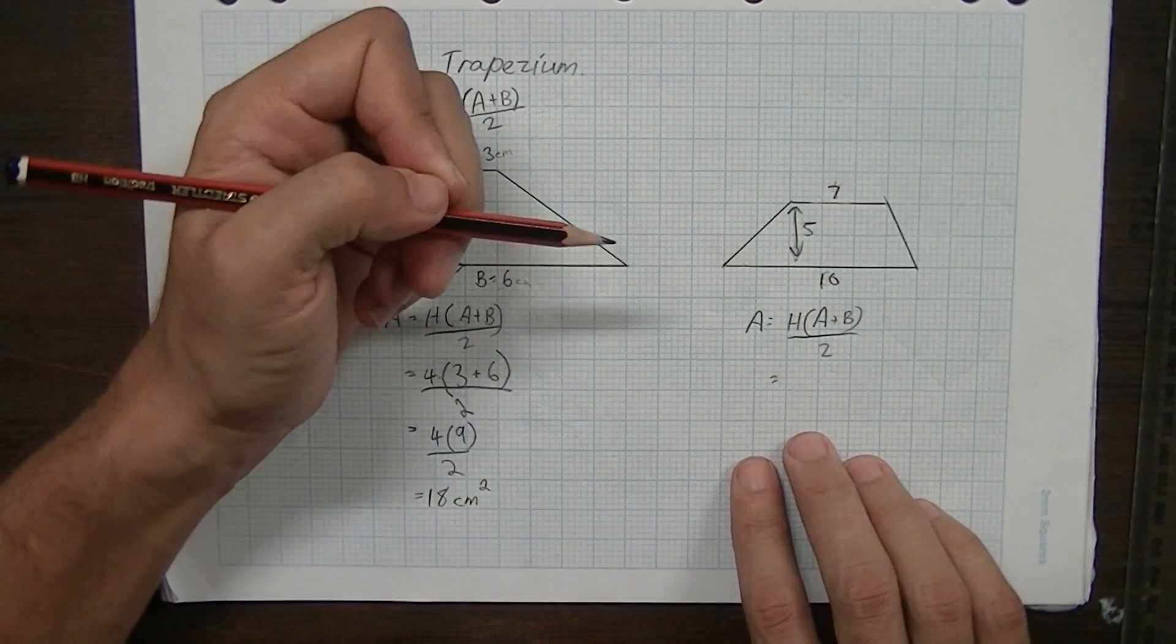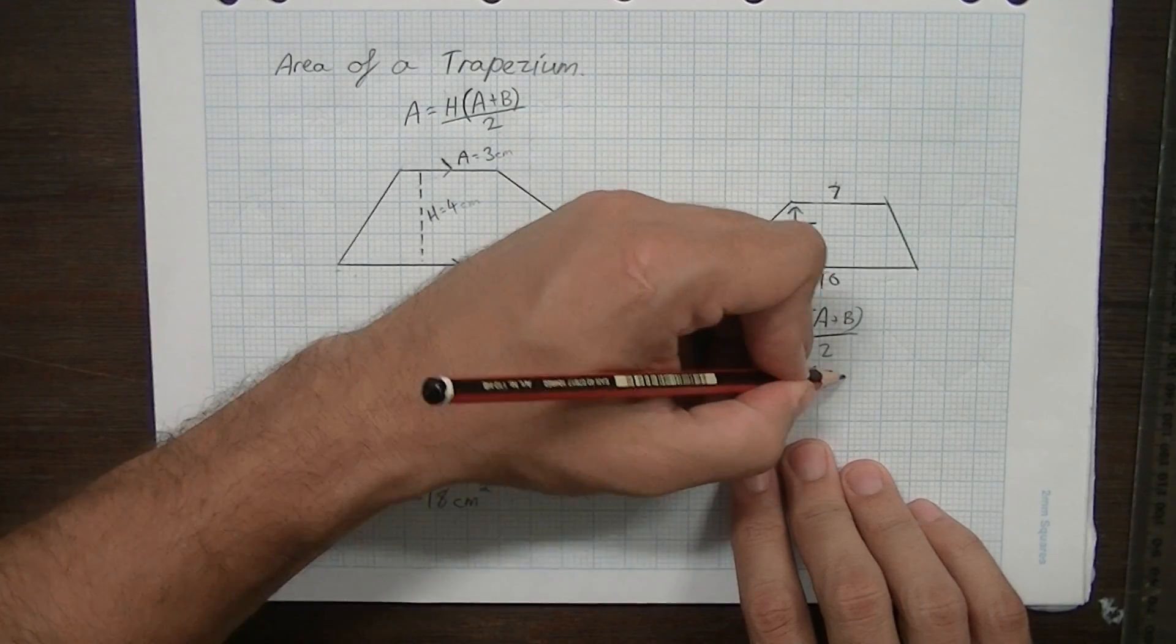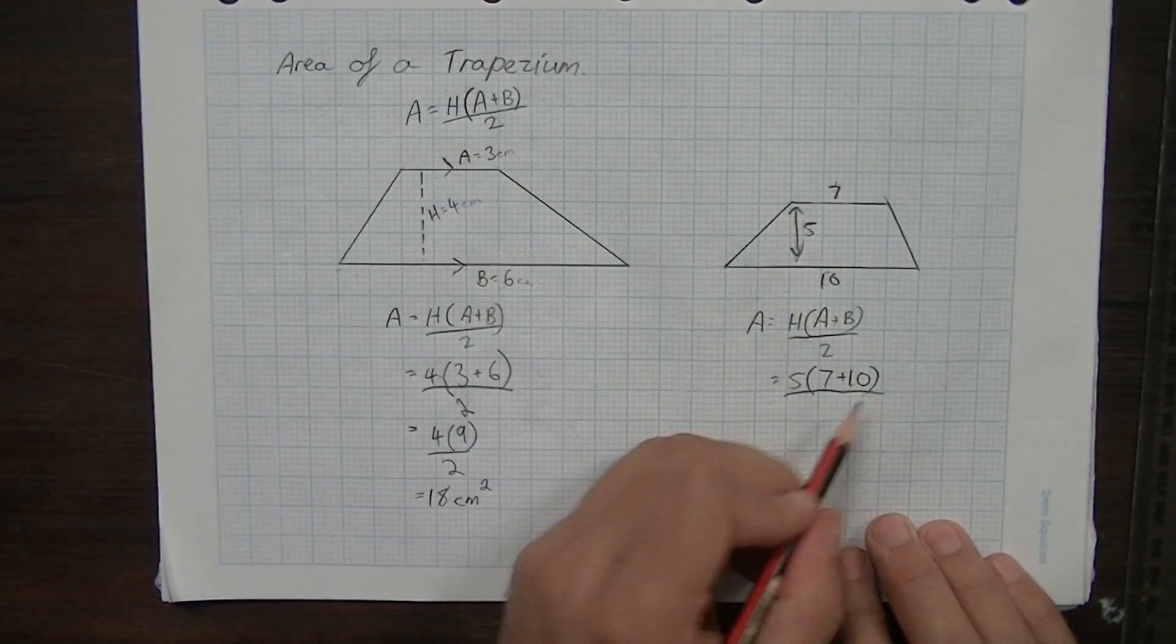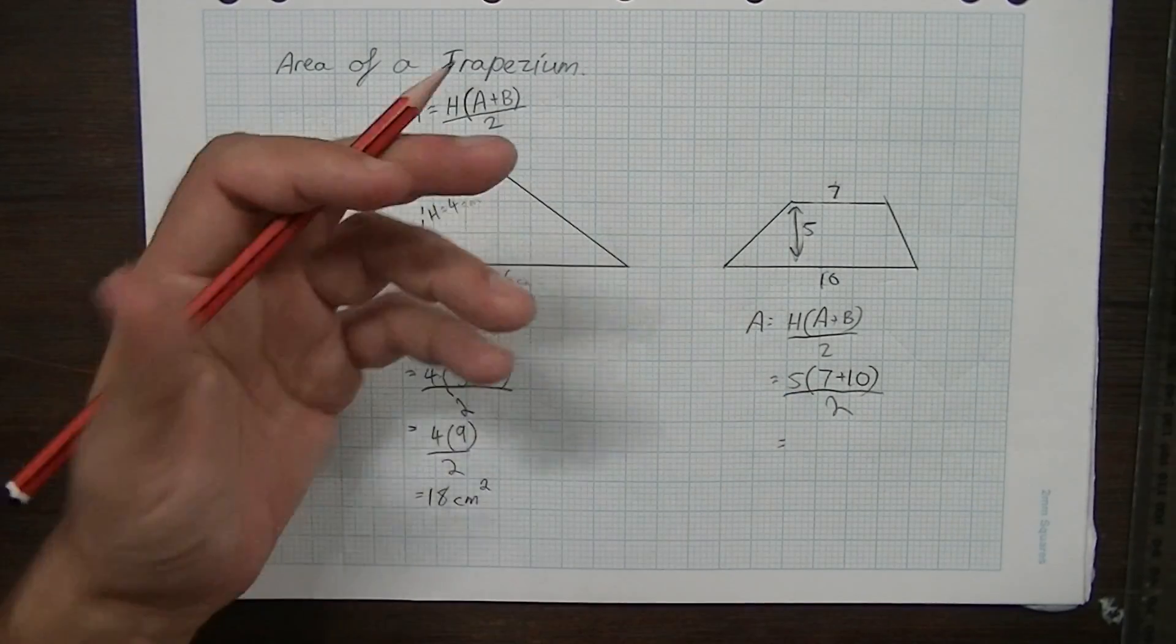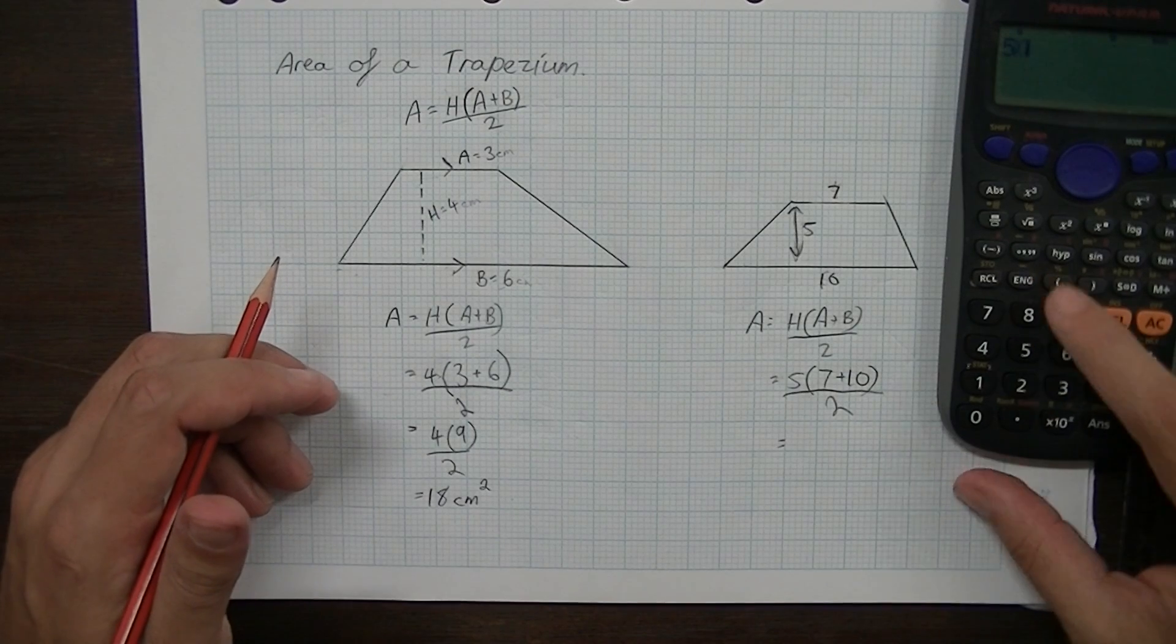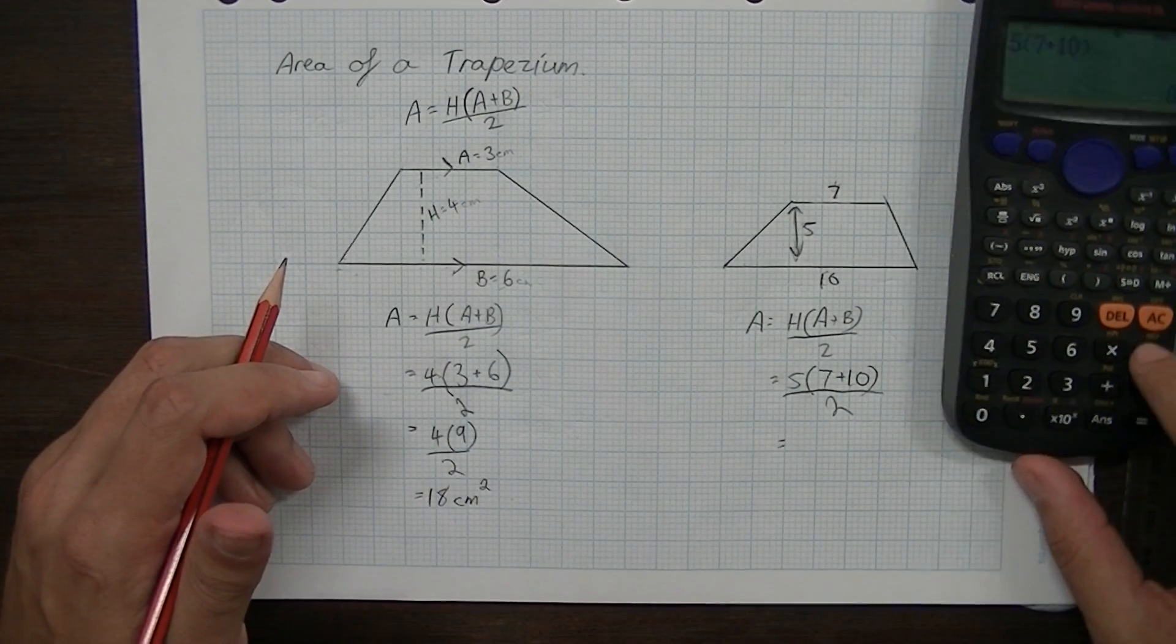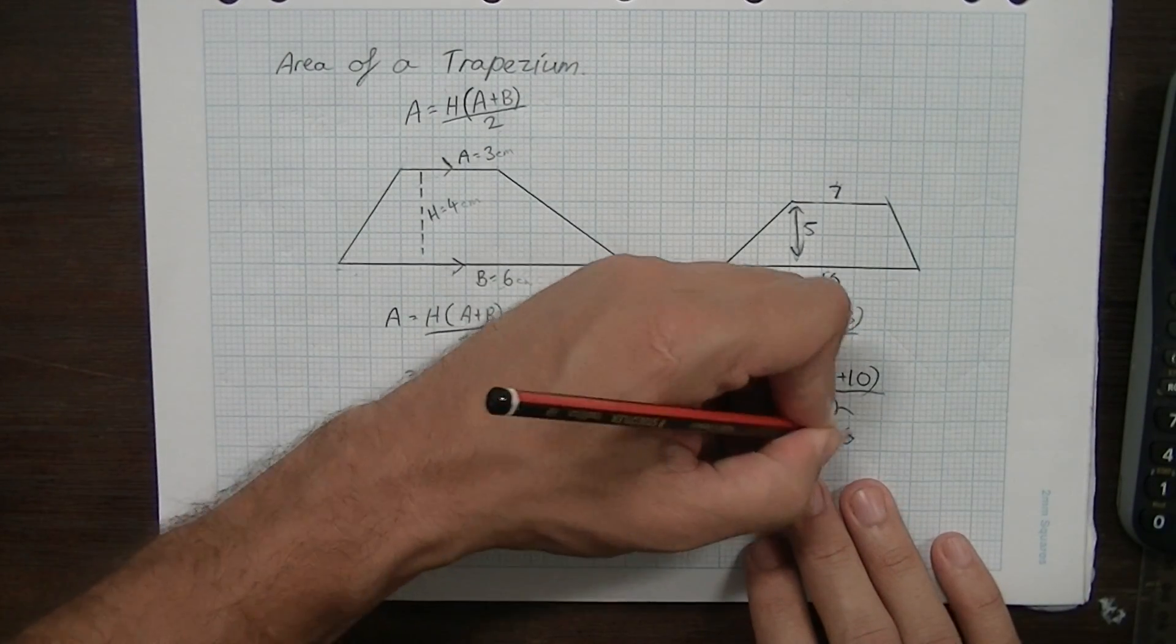Then just write your numbers in. H is equal to 5, A is equal to 7, B is equal to 10 and that's all going to be divided by 2. You can just type that directly into your calculator just like how I've written it there.